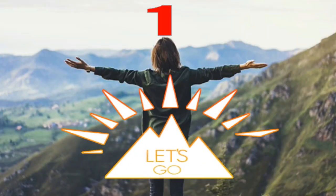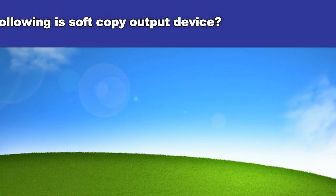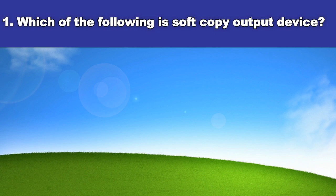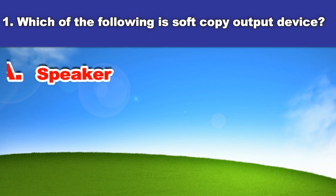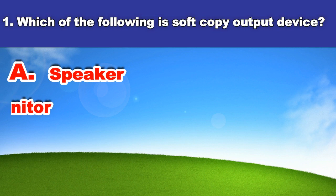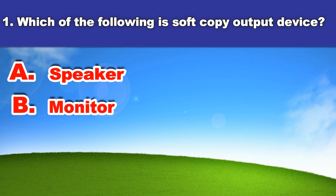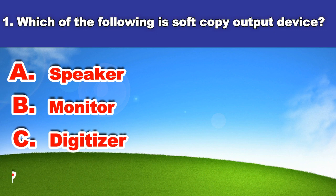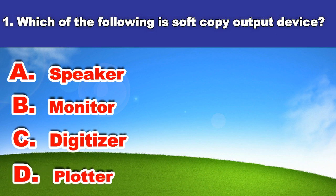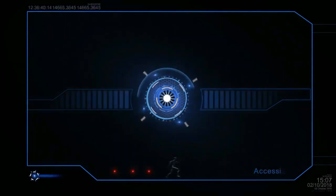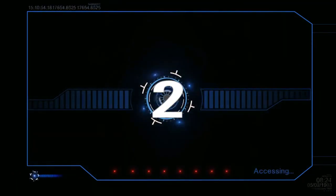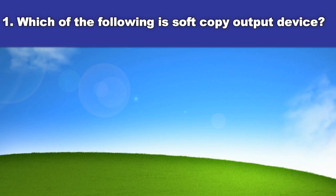First question. Which of the following is a soft copy output device? A. Speaker, B. Monitor, C. Digitizer, D. Plotter. And the answer is: Speaker.